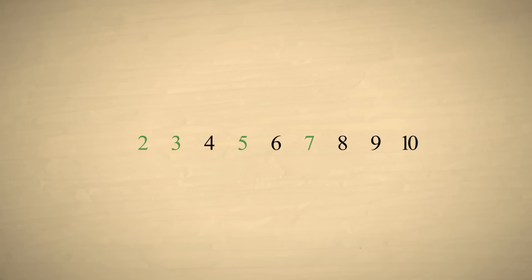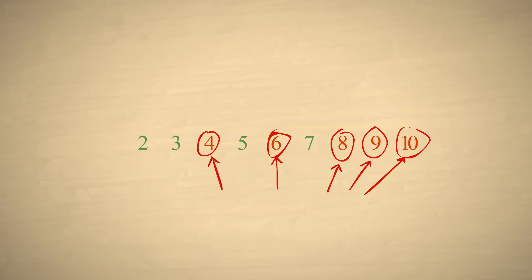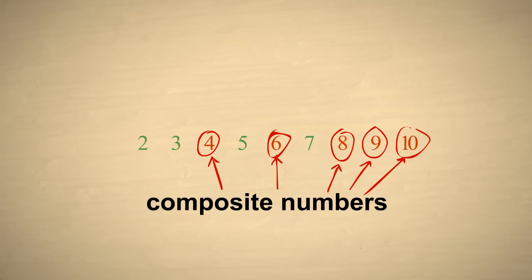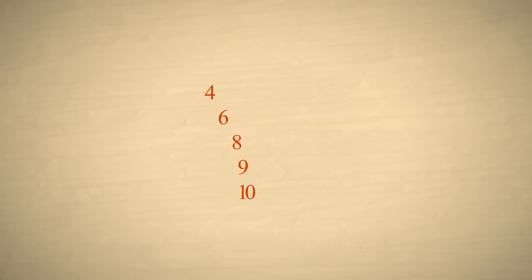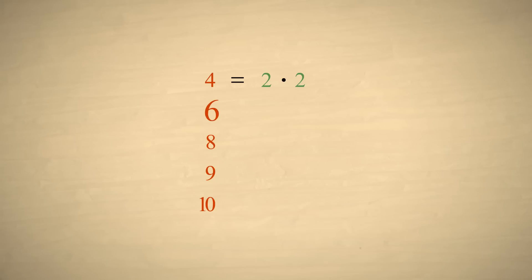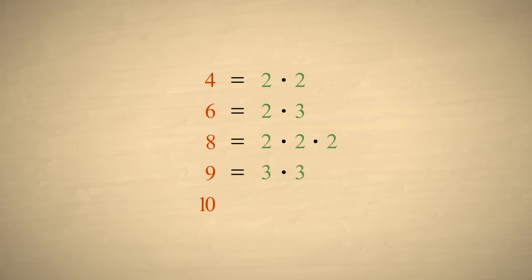Natural numbers which have more than two divisors are called composite numbers. All composite numbers can be broken down into a product of prime numbers. For instance, the composite number four is the product of the prime number two times itself. Six is a product of the primes two and three. Eight is two times two times two, nine is three times three, and ten is two times five.